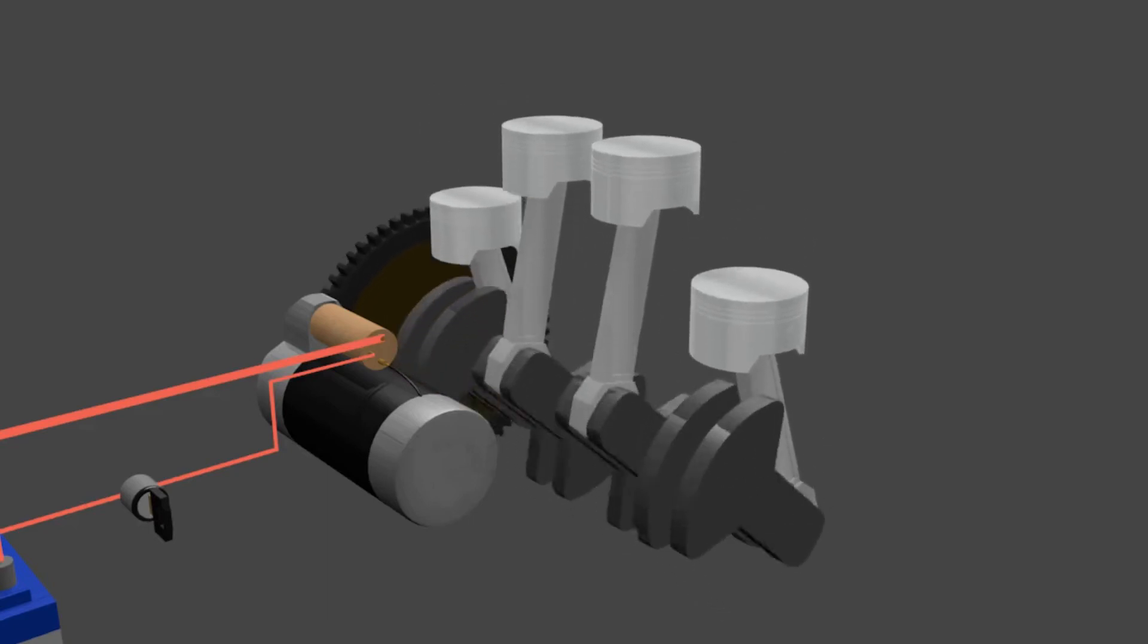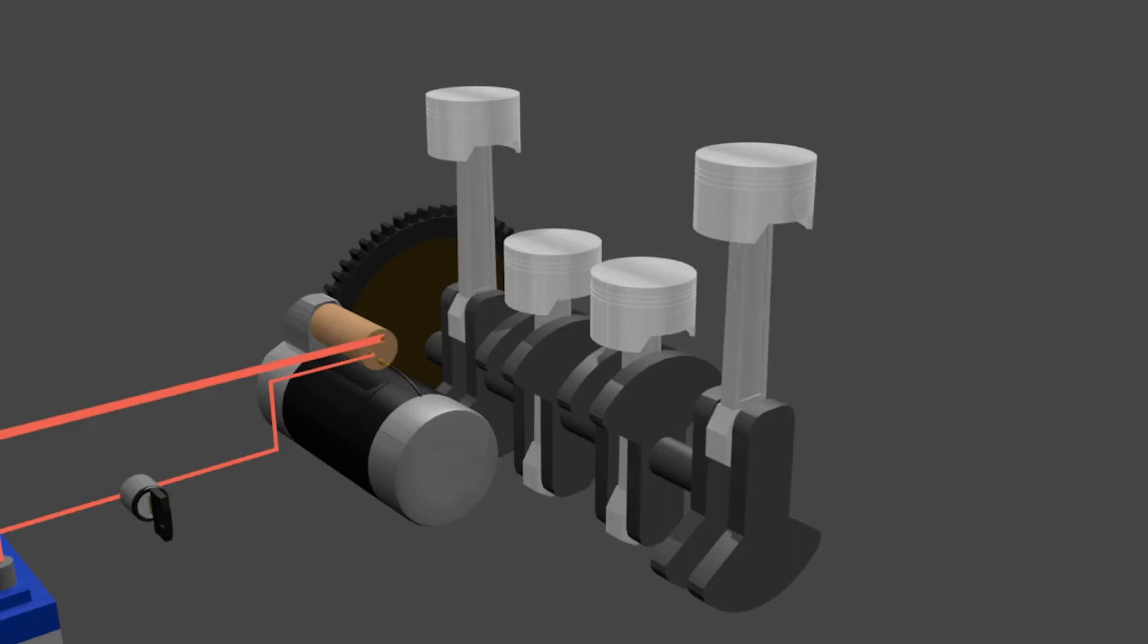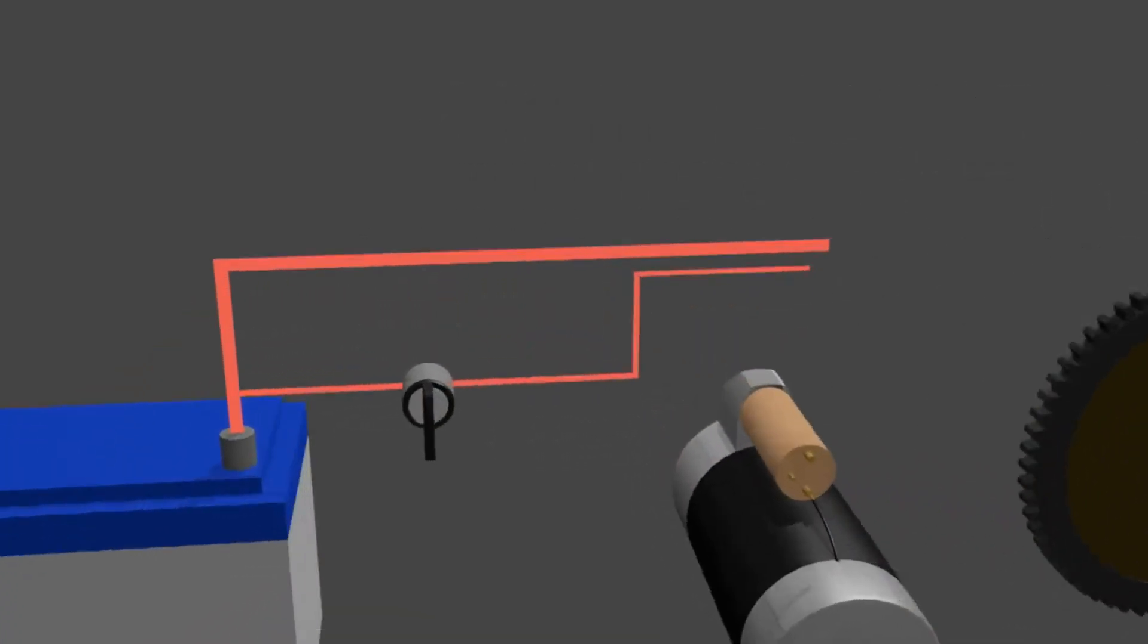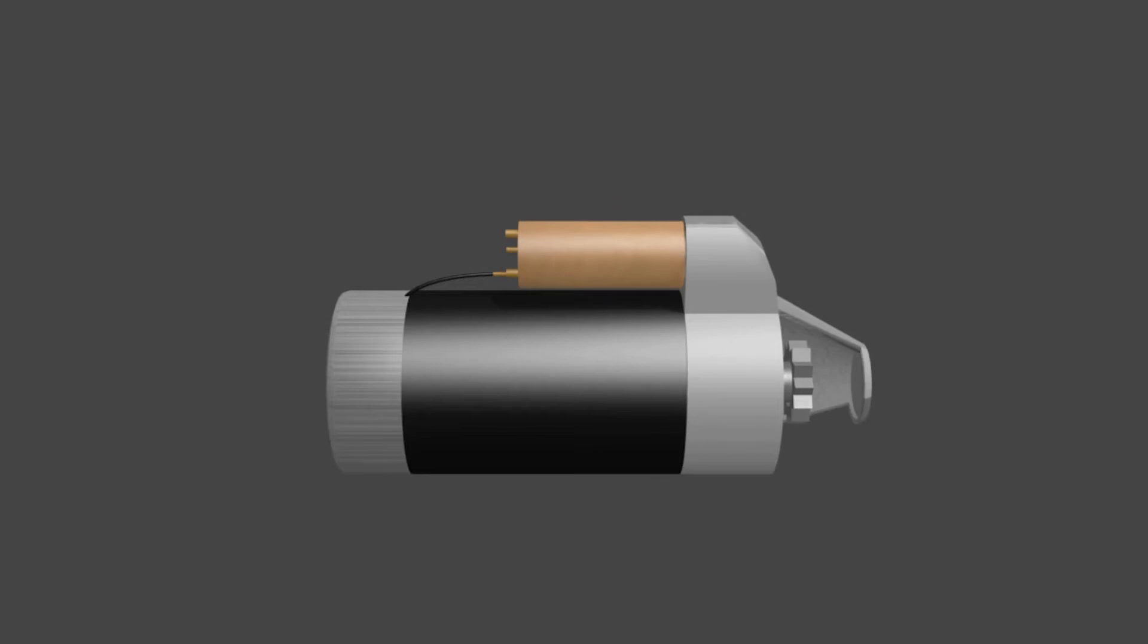But the question, how does the starter motor work? We will discuss it. If you see this device, there are two parts, the electric motor and the starter solenoid. First, we will discuss the electric motor.